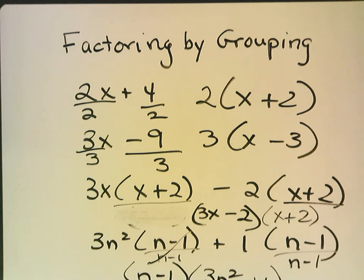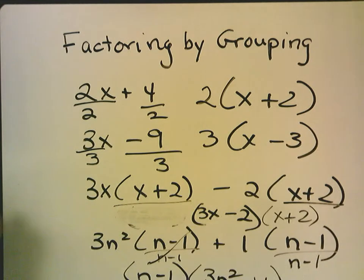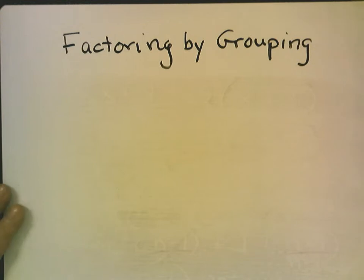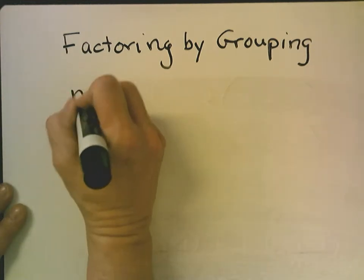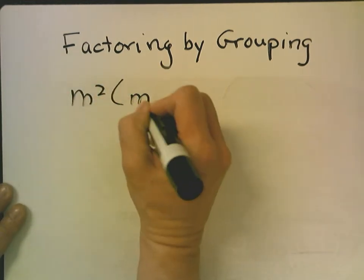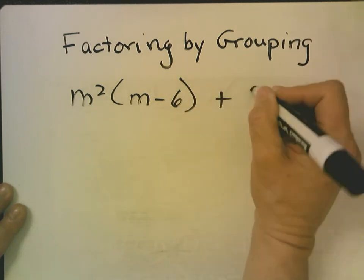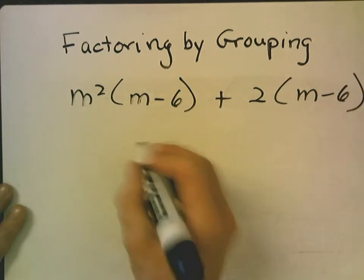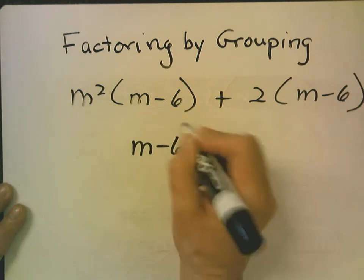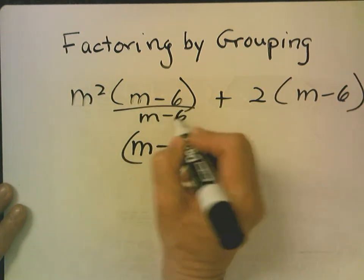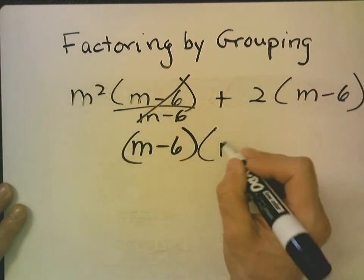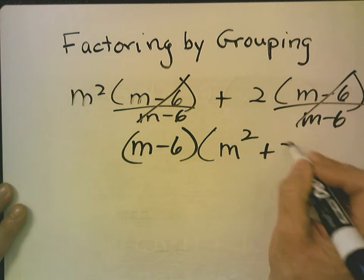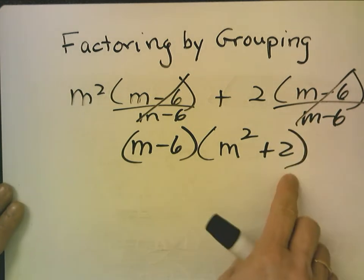Okay, so this is something you need to be able to do before you factor by grouping. So, let's try a few more. So, here, m squared times m minus 6 plus 2 times m minus 6. What's the common factor? m minus 6. When I pull out m minus 6, what do I have left? m squared here, and what do I have left here? Plus 2. So, I'm left with this.